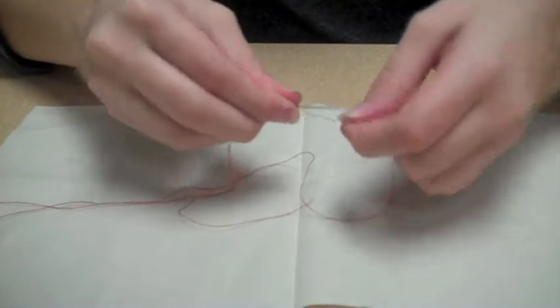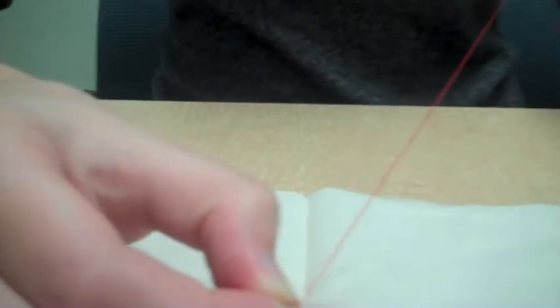Once you're done with that, you let one end of the thread hang about halfway down. The other end, you put it against the needle, grab it with your hand, wrap it around three times, grab it, and pull it through. And that makes a knot.